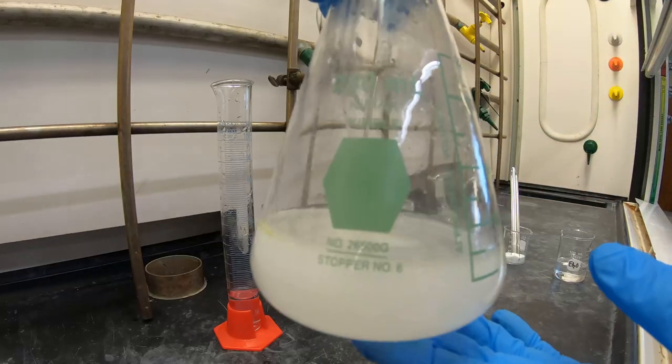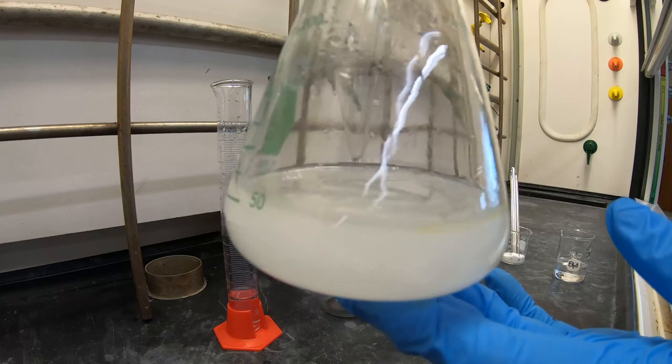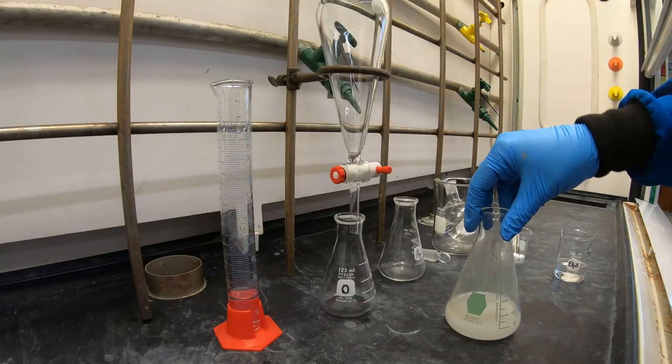Set up your separatory funnel while the solution is cooling. You'll see a yellow layer that is formed on top. This is actually your aniline product.